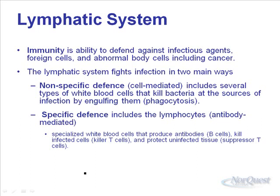There are two basic types of defense enacted by the lymphatic system. There's the nonspecific defense, which is cell-mediated, and it includes several types of white blood cells that kill bacteria at the source of infection by engulfing them. These nonspecific defenses go out and attack any cell that they don't think should be in our body — it doesn't matter if it's a virus or what type of bacterial cell it is. Anything that looks foreign, they eat it. Then there's specific defenses conducted by the lymphocytes, and this is antibody-mediated — a more specialized defense.